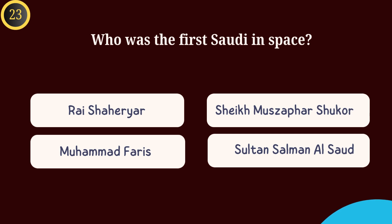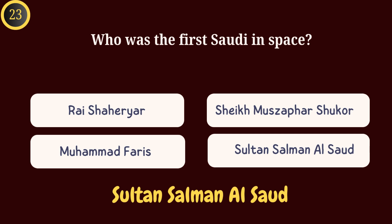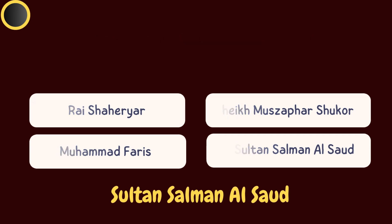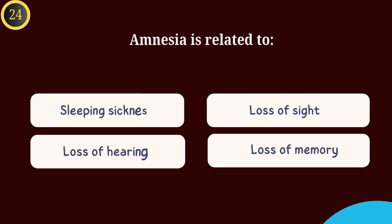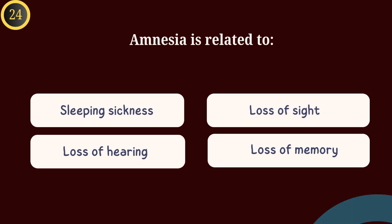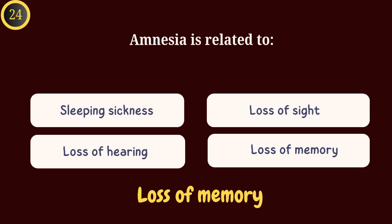Question 23: Who was the first Saudi in space? Answer: Sultan Salman Al Saud. Question 24: Amnesia is related to — Answer: Loss of memory.